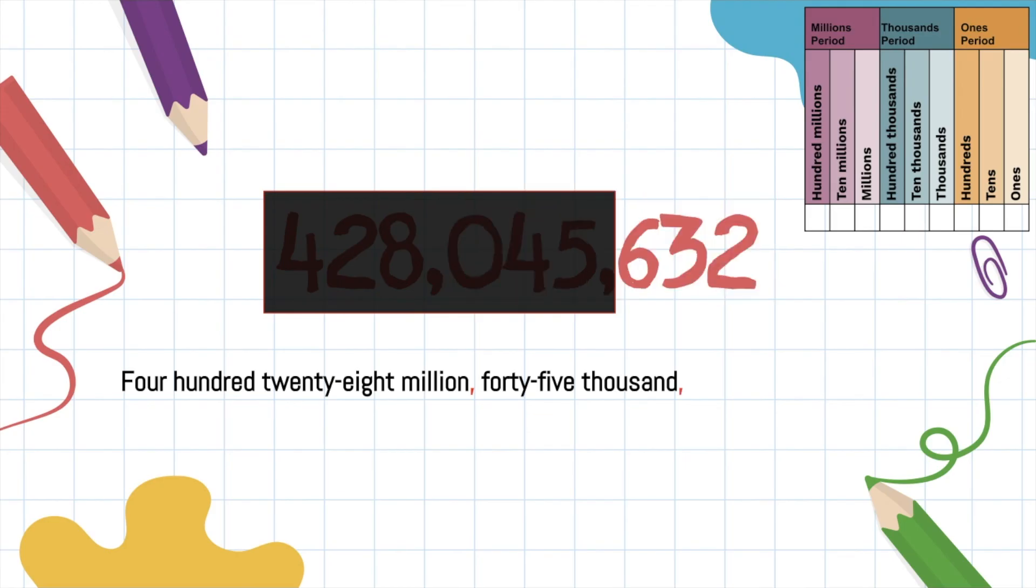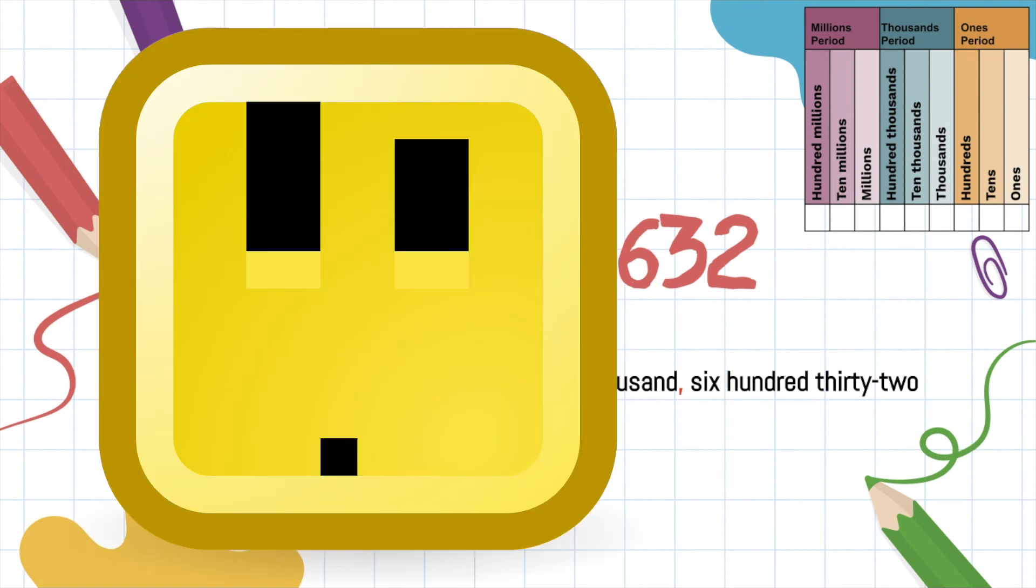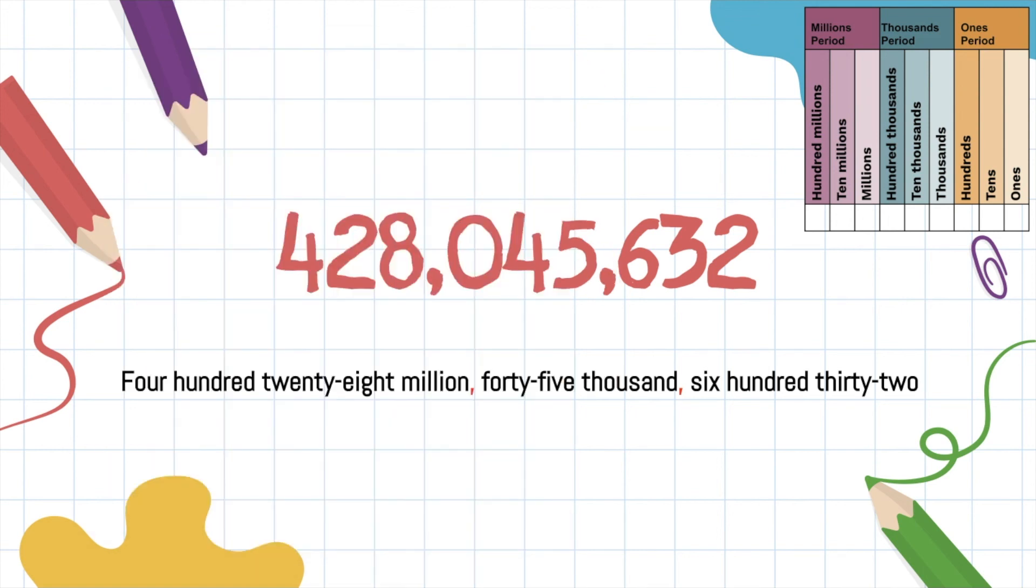Don't forget the comma. First name, 632. Last name, psych! You thought you was getting a last name this time, bro? No, sir. Remember, when you get to the ones, then you're done. Anyways, I'll keep practicing that rhyme while you keep practicing reading larger numbers.